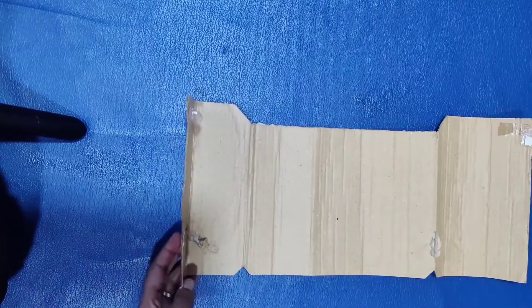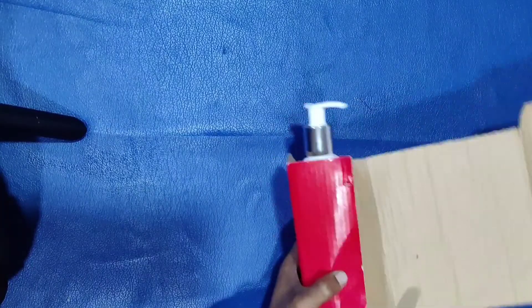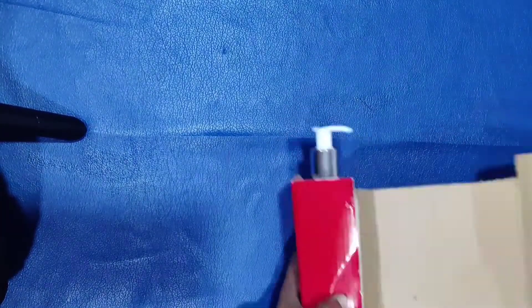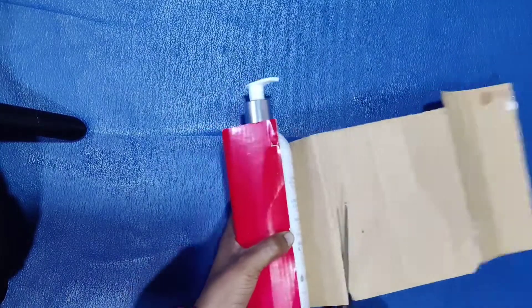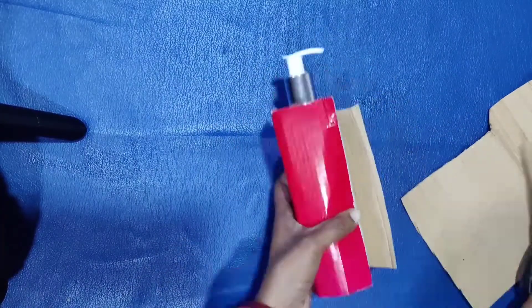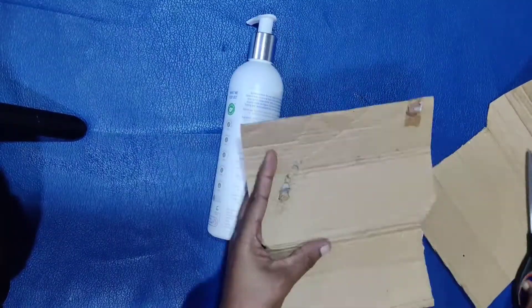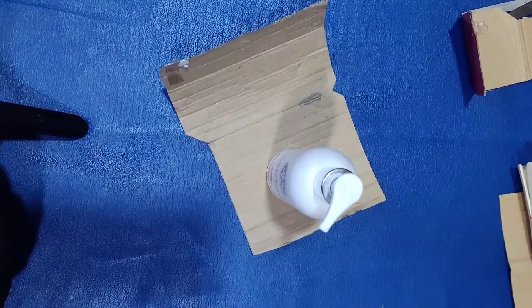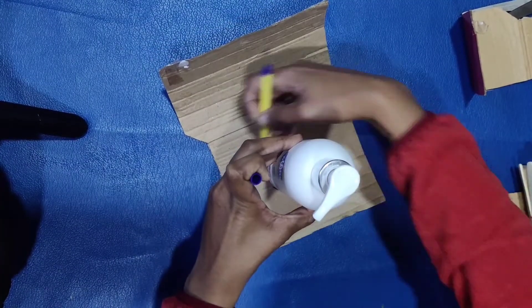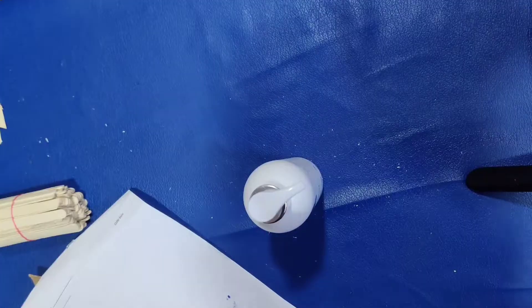It's a cardboard paper wrap, just a wrap. It's about 6cm height. Then we will cut the bottle and cut the base.